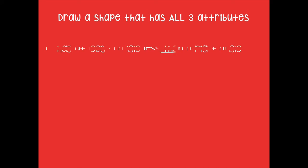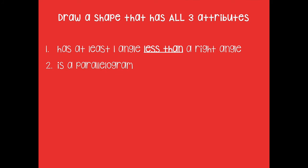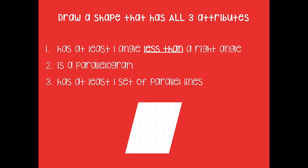Here's another one. Your attributes are: has at least one angle less than a right angle, is a parallelogram, and has at least one set of parallel lines. Pause the video and draw your shape. Here's what I drew — a parallelogram. It has an angle that is less than a right angle, it is a parallelogram because the sides are parallel, and that also follows with the third attribute: at least one set of parallel lines. This one actually has two.